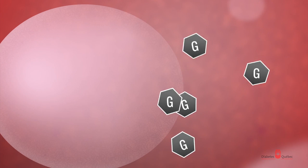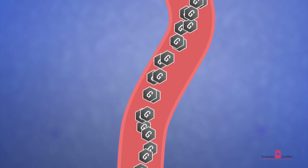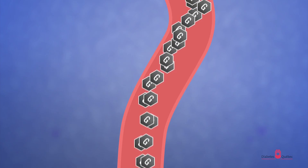If there is a lack of insulin, glucose builds up in the blood. This results in an abnormally high level of blood glucose, which we call hyperglycemia.